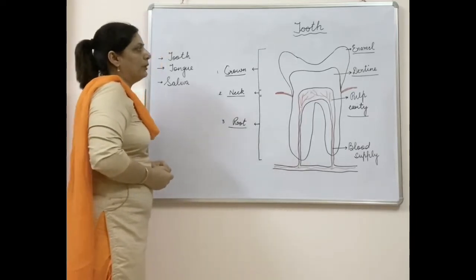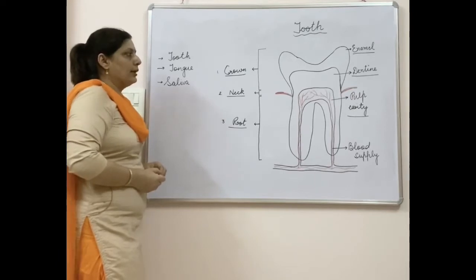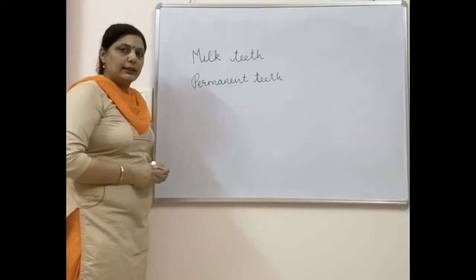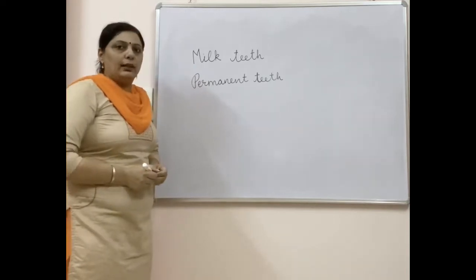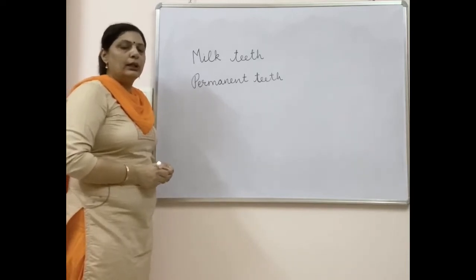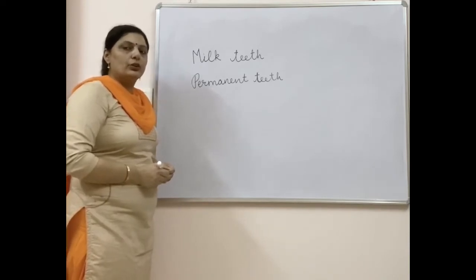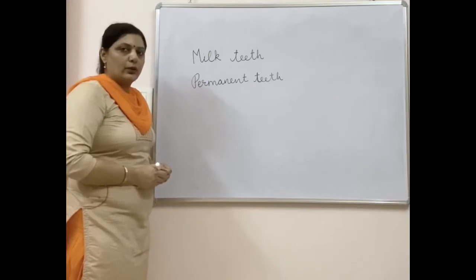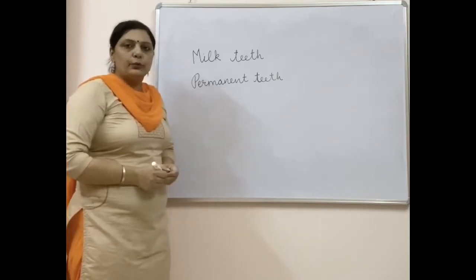Now we will learn about the different types of teeth in our mouth. Each human individual has two sets of teeth in their lifetime — teeth grow twice in a life. The first set is called milk teeth, growing at around six months up to two years of age. Around six to nine years of age, milk teeth are replaced by the permanent set of teeth.